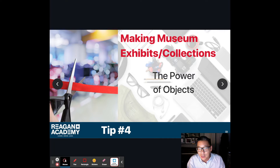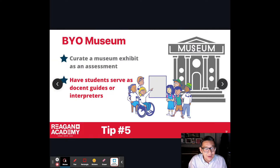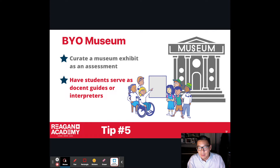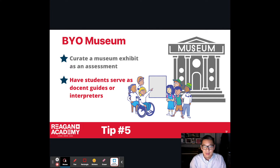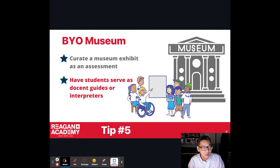Tip number five is curating a museum exhibit. Each group might be in charge of a particular exhibit — say, a Korean American exhibit — and then they become the docents, the experts, the guides, or the interpreters for the various visitors who come in.